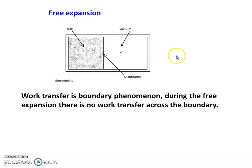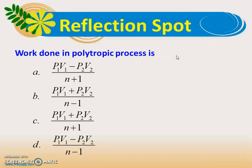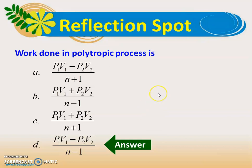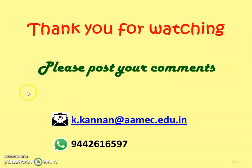We stop here. There is a question: what is the work done in the polytropic process? From our discussion, the correct answer is option D: (P1V1 − P2V2) / (n − 1). Thank you for watching. Please post your comments in the comments box. We will meet again in another video lecture on thermodynamics, first chapter. Until then, bye.